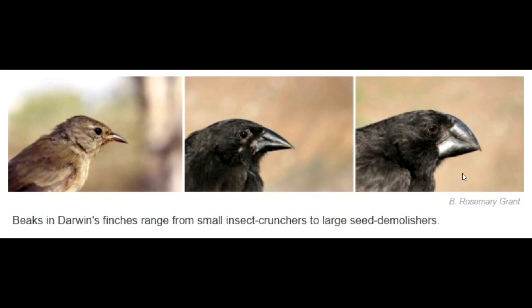A large ground finch had arrived on the island and ate all the larger-sized seeds. There were far more medium-beaked finches to start with on the island, but it was the ones with the smaller beaks that actually survived better, because they ate the smaller seeds that were left over. These true medium-sized beaked finches perished in huge numbers, and essentially nowadays this medium-beaked finch has much smaller beaks than they did prior to the severe drought in 2003.